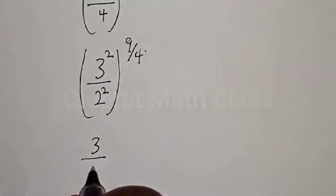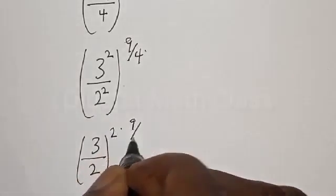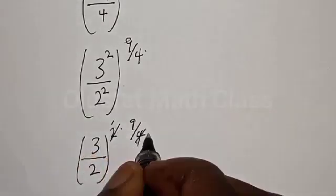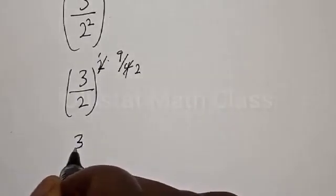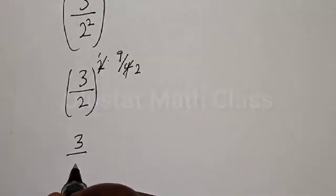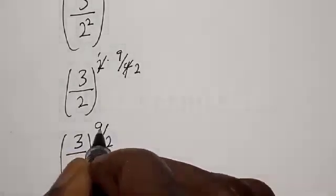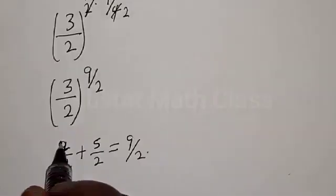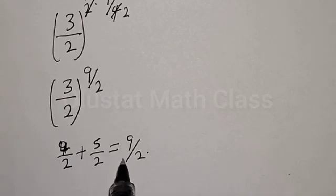We have (3 divided by 2) all squared, raised to the power of 9 divided by 4. Applying the exponent rule, the 2s multiply to give (3 divided by 2) raised to the power of 9 over 2. Now, 9 over 2 can be written as 4 over 2 plus 5 over 2, which equals 9 over 2.